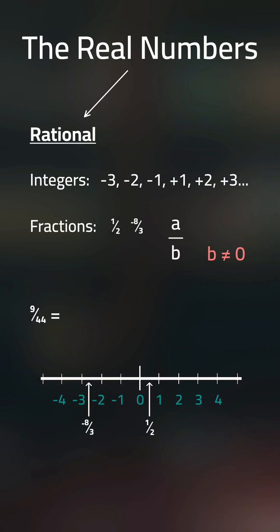such as 9 over 44, which equals 0.204545454545.